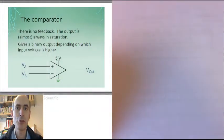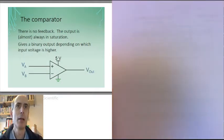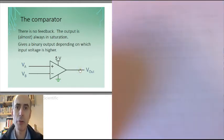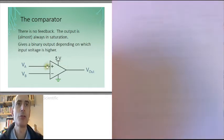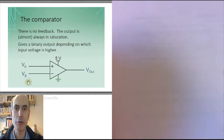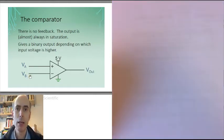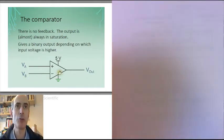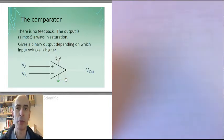This is a basic comparator. It has two inputs, VA and VB, and an output Vout. And the job of an ideal comparator is to output a positive voltage if VA is greater than VB. And you can make that very simply using a simple op-amp wired up like this.